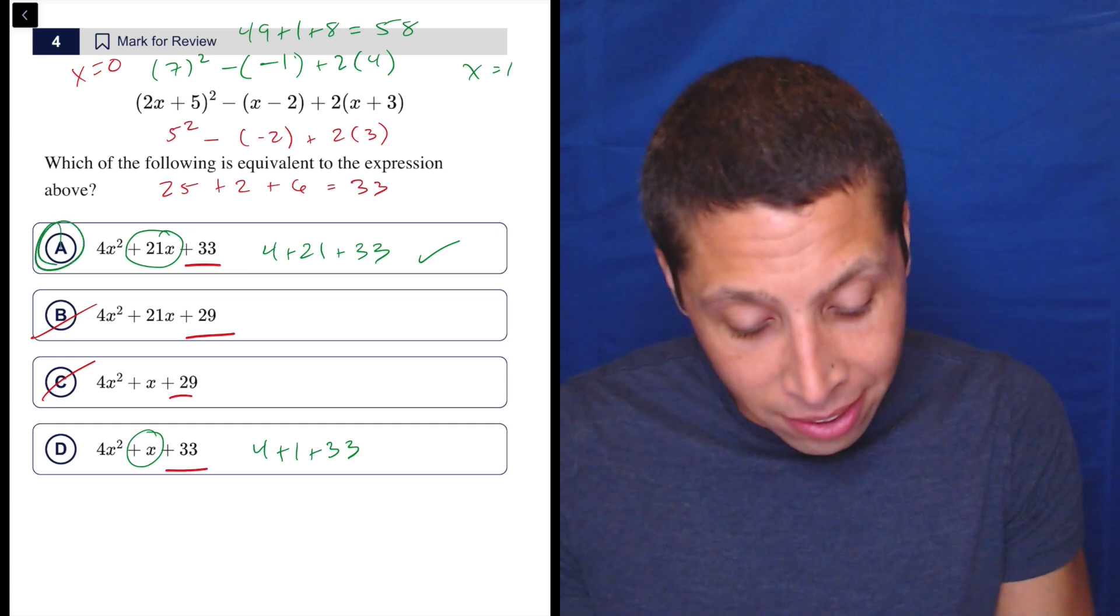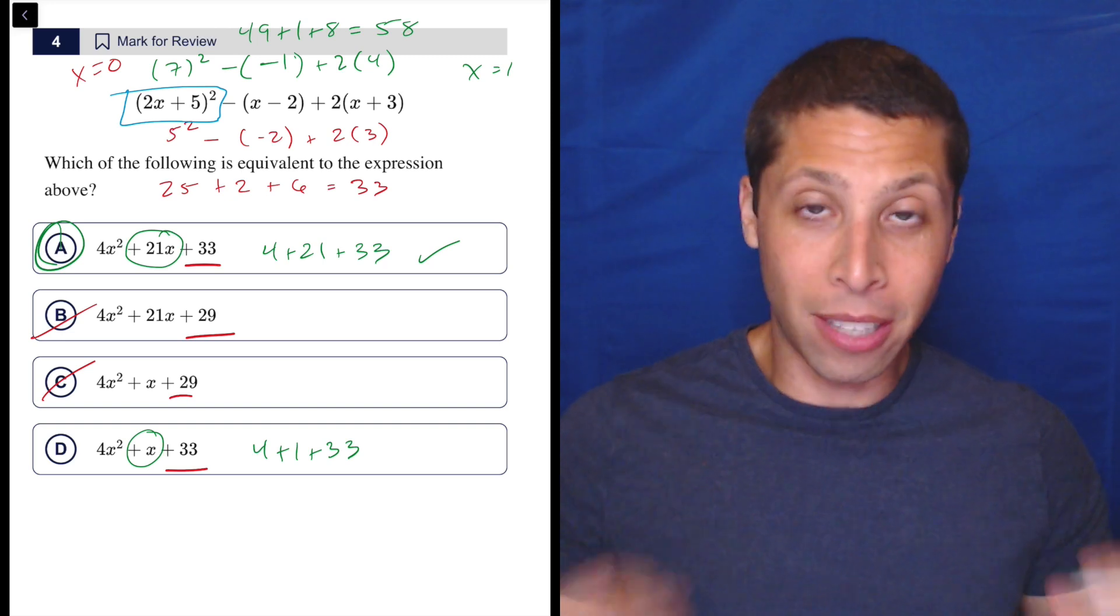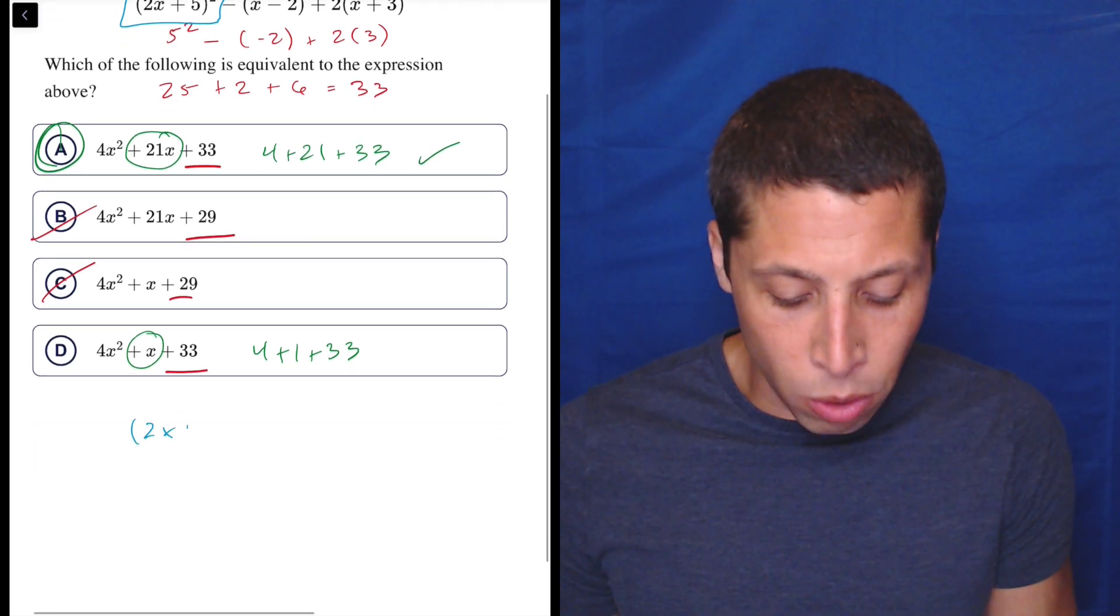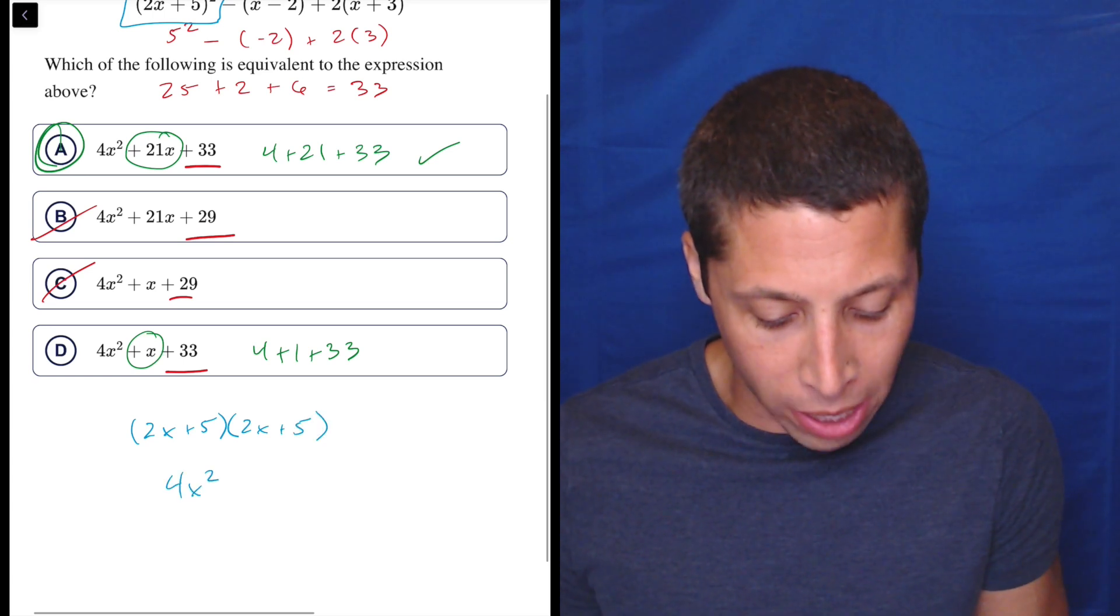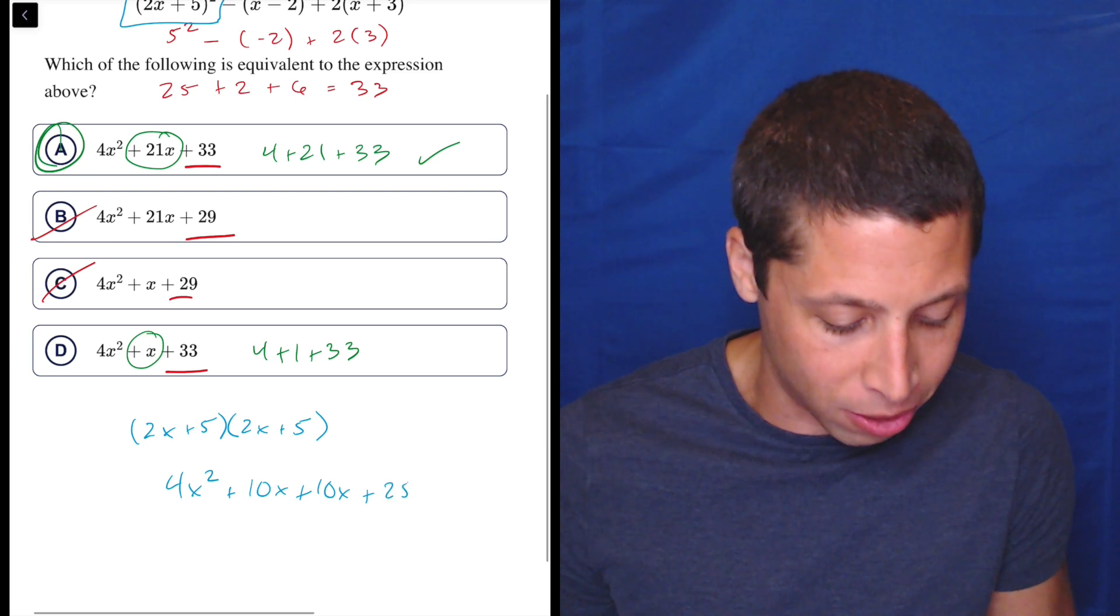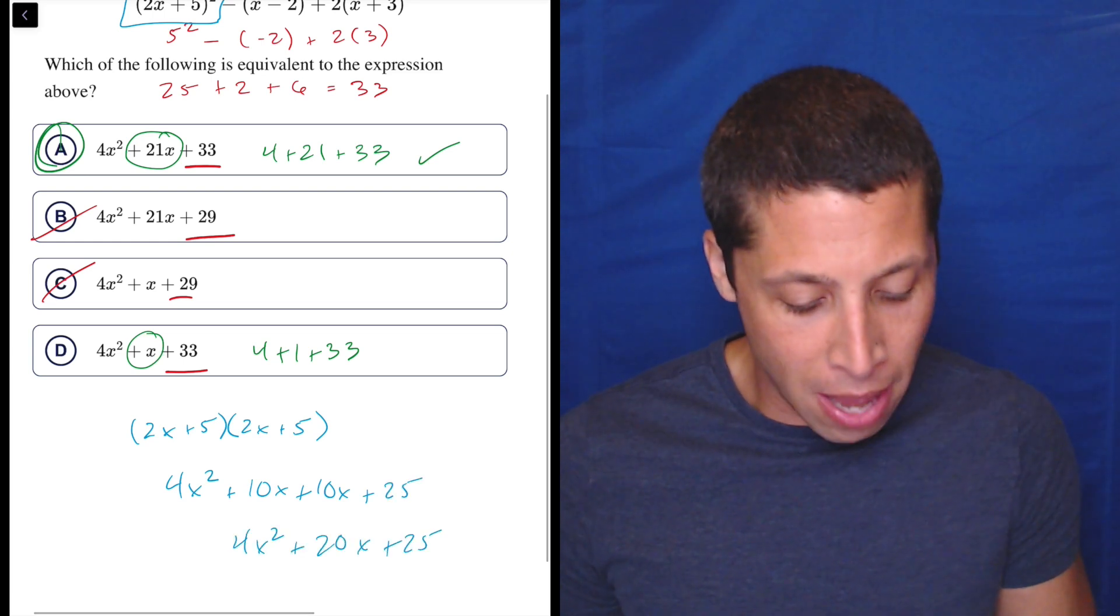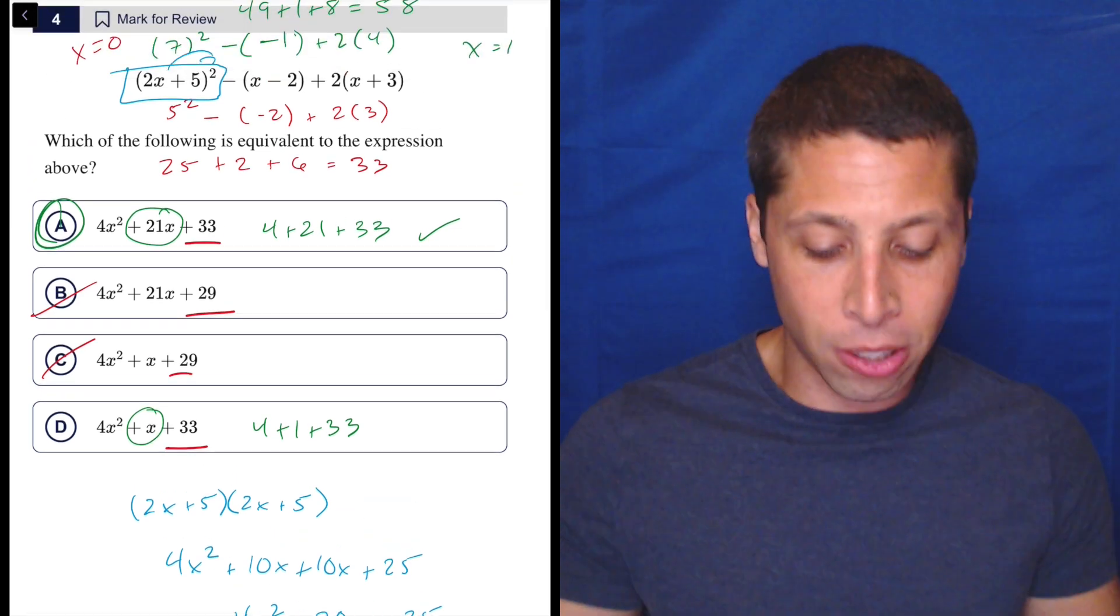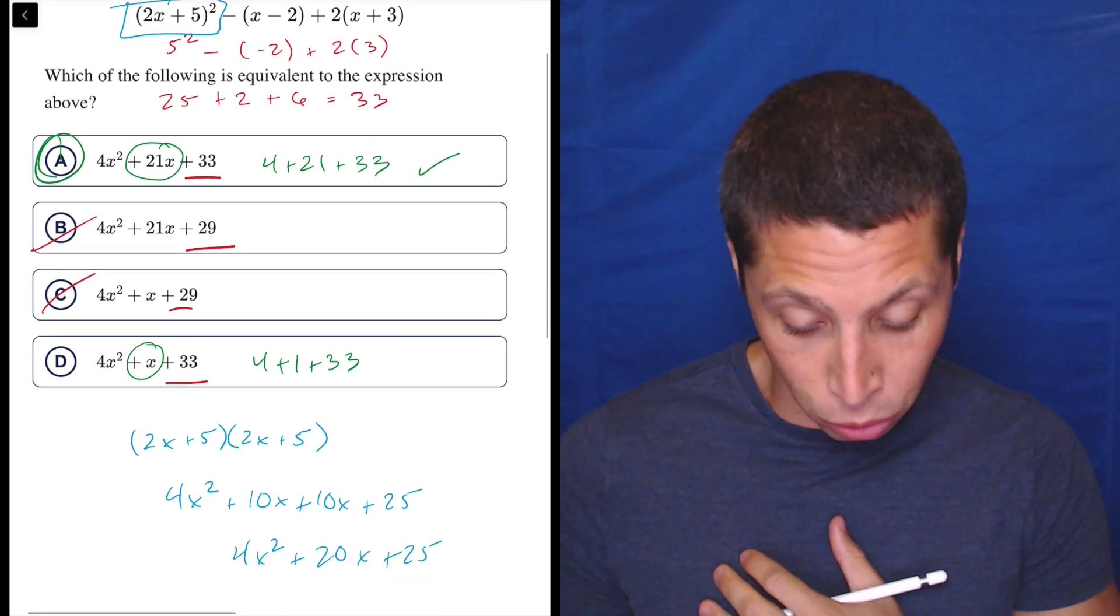I like that. I just honestly, I really, there's a big danger here. Two x plus five squared. In order to actually do that, you're going to need to do the foiling out. Two x plus five times two x plus five. That's four x squared plus 10x plus 10x plus 25. So four x squared plus 20x plus 25. But many of you are going to just do it like a distribution and do four x squared plus 25 and miss out on that extra 20x.